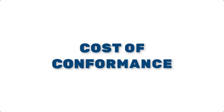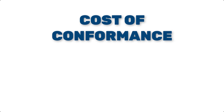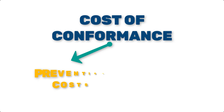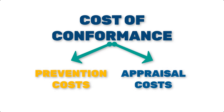First, let's talk about the cost of conformance. This is the money a company spends to make sure their products or services meet quality standards. It includes two key components: prevention costs and appraisal costs. Prevention costs are proactive costs like training employees, designing efficient processes, and maintaining equipment to avoid defects.